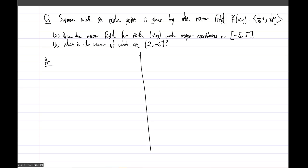what is the vector of wind at the point two comma negative five? So I'll get you started, but I think once we get some groundwork laid down here, just pause and try it on your own. So x, y,